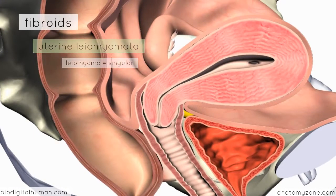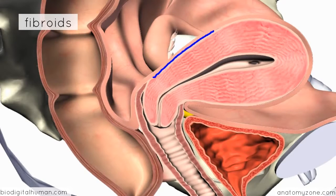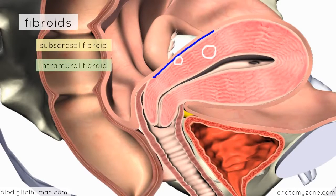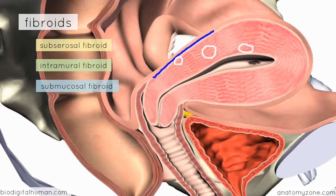There are three subtypes of fibroid depending on their location within the myometrium. The outer layer of the uterus is the perimetrium — the outer serosa. A fibroid located just below this serous layer is called a subserosal fibroid. Fibroids located directly within the wall of the myometrium are called intramural — from the Latin murus meaning wall. The final type lies just underneath the endometrium and is called a submucosal fibroid. Fibroids are a common cause of menorrhagia but also cause pain known as dysmenorrhea, and large fibroids can cause pressure effects on the bladder, leading to urinary frequency or retention.